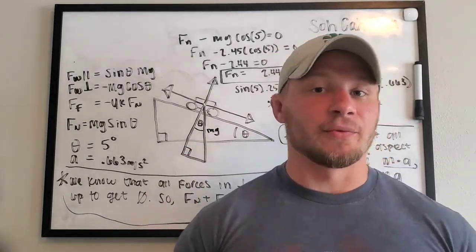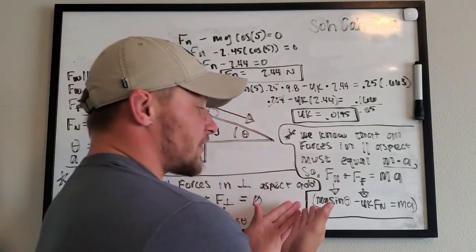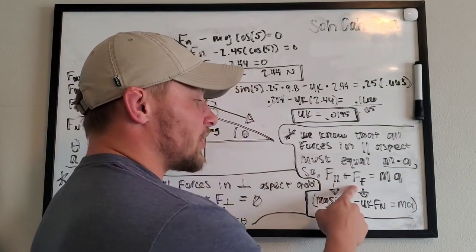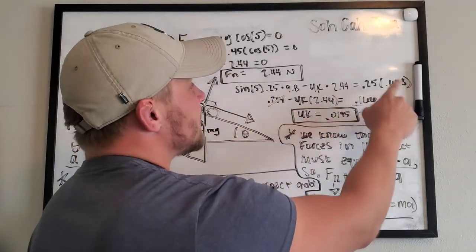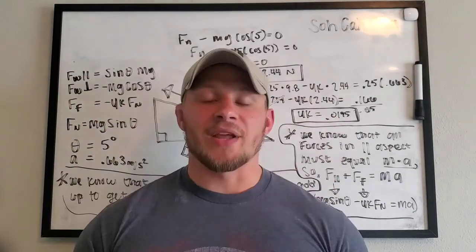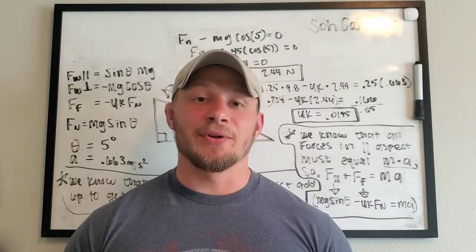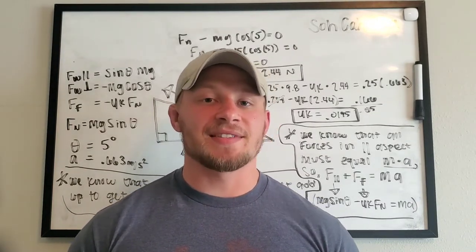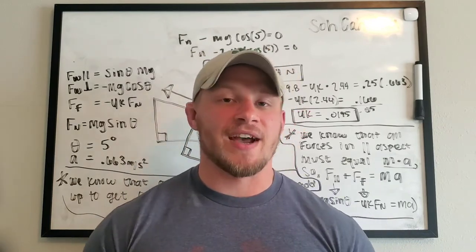Now once we have the normal force, we can plug it into this equation here, which is just what I wrote right here. The parallel force plus the friction force equals mass times acceleration. Plug all of that in here, and we get the drag coefficient. Now we have every variable that we need to plug into the computer model. And the computer model should output the same exact thing that we see when we videoed the actual cart rolling down an actual ramp.